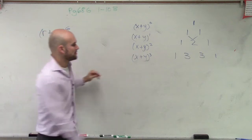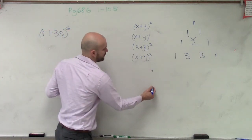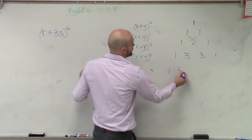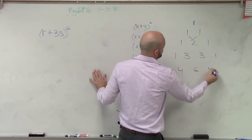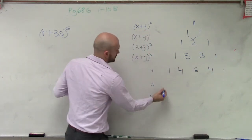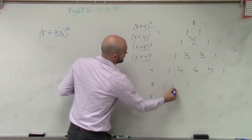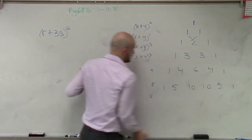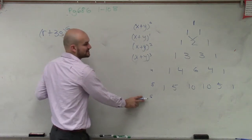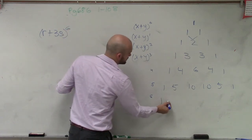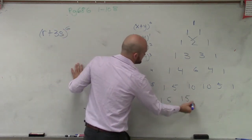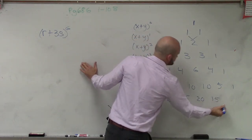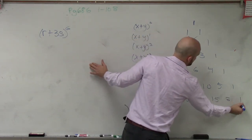So that's to the third. If we want to figure out the fourth, fifth, and sixth: for the fourth we go 1, 4, 6, 4, 1. For the fifth: 1, 5, 10, 10, 5, 1. And if we expand a binomial to the sixth power, we'll have 1, 6, 15, 20, 15, 6, and 1. So those would be what your coefficients are for each term.